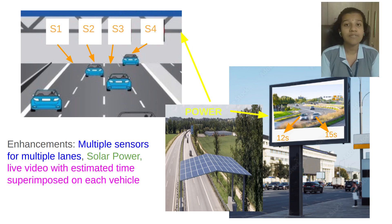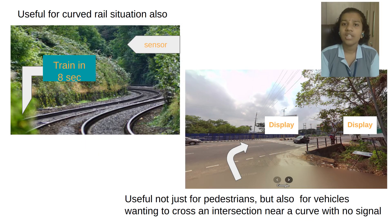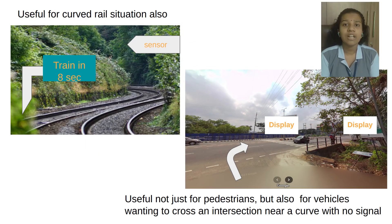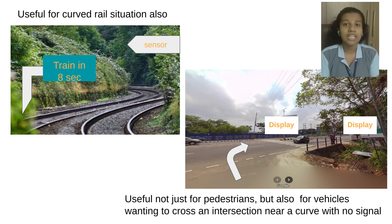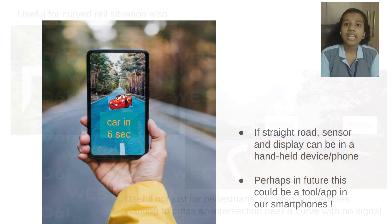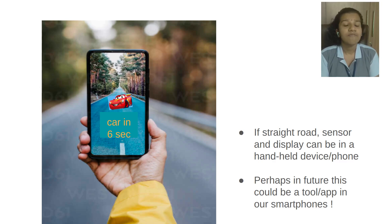Indeed, better sensors will be needed. This idea can be extended to a curved railway track also, where many accidents happen, or even for vehicles crossing an intersection. In the case of a straight road or rail, even a handheld device which has both the sensor and the display can be made.